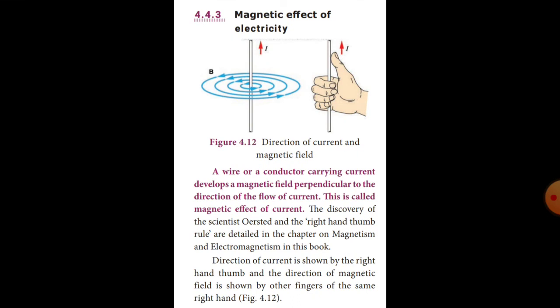A wire or conductor carrying current develops a magnetic field perpendicular to the direction of the flow of current. This is called the magnetic effect of electric current. When electric current passes through a wire, a magnetic field is produced.